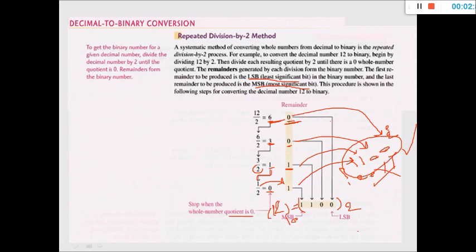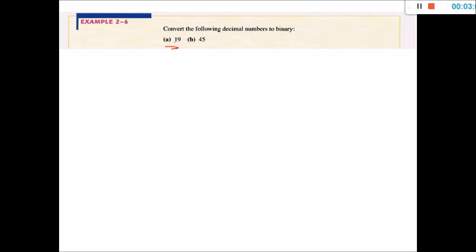Let's go to another example: 19. I will solve this one and you can solve 45. So 19 divided by 2 equals 9, and the remainder is 1. Again, 9 divided by 2 equals 4, and the remainder is 1.